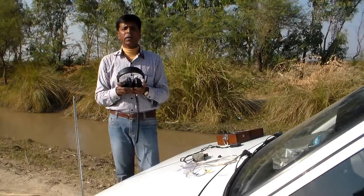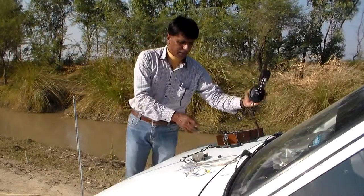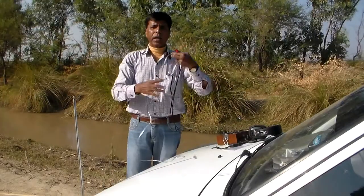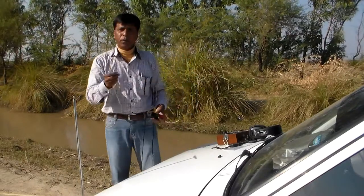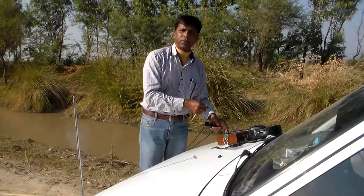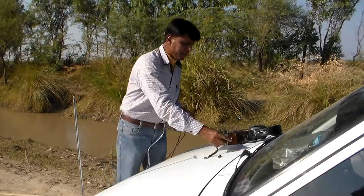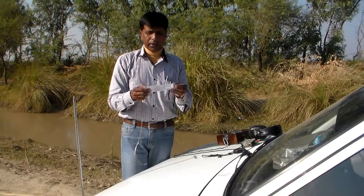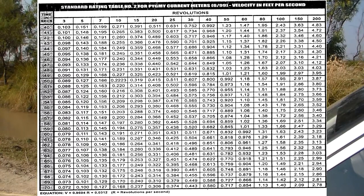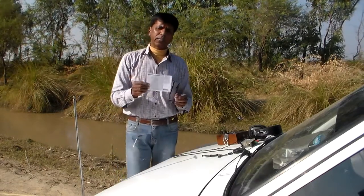This is the headphone through which we will record the clicks when one revolution is completed by the current meter. This is the battery and this is the wire. The yellow end of this wire will be connected to the battery and the blue end will be connected to the current meter. This is a stopwatch through which we will record the time in seconds. This is the rating table provided by the manufacturer, given in feet per second as well as meters per second. Since we are recording all measurements in feet, we will use the velocity in feet per second.